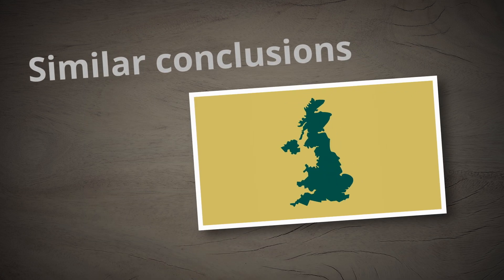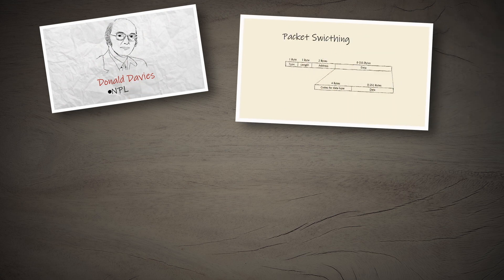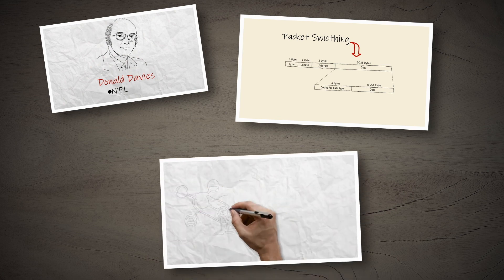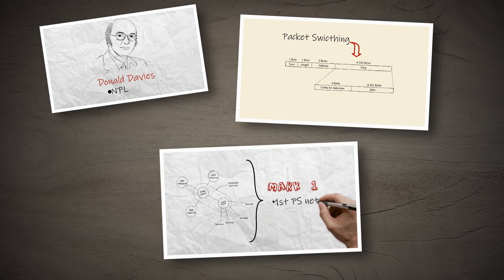But across the Atlantic, similar findings were being made about distributed networks. While working at MPL in the UK, Donald Davis conceived a networking concept similar to Byron's, which he would name packet switching. His ideas would fare better than Byron's and would be used to build the Mark 1, the first packet switching network.